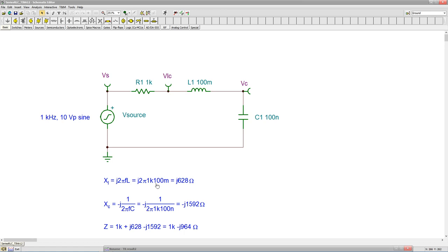X of L, 2πFL. So that works out to j628Ω. For the capacitor, 1 over 2πFC. That works out to negative j1592Ω.